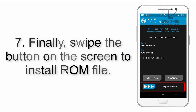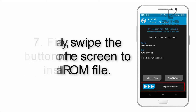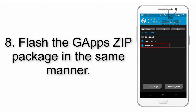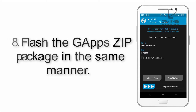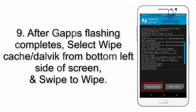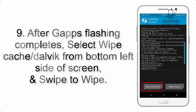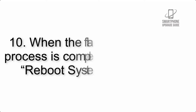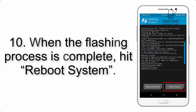Step 7: swipe the button on the screen to install the ROM file. Step 8: flash the GApps zip package in the same manner. Step 9: after GApps flashing completes, select Wipe Cache and Dalvik from the bottom left side of the screen and swipe to wipe.